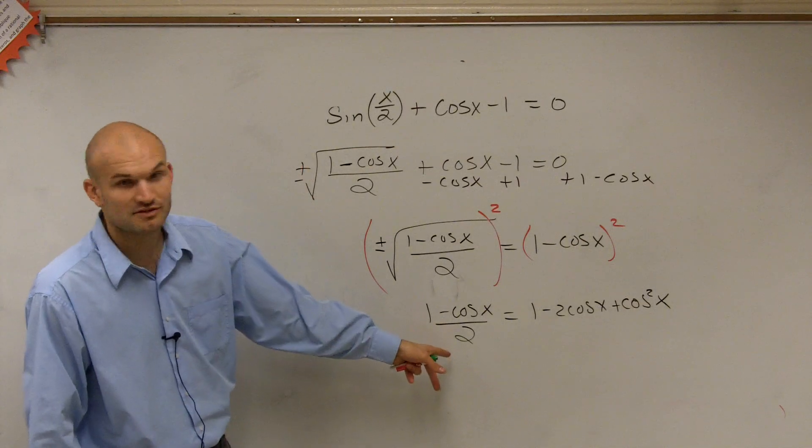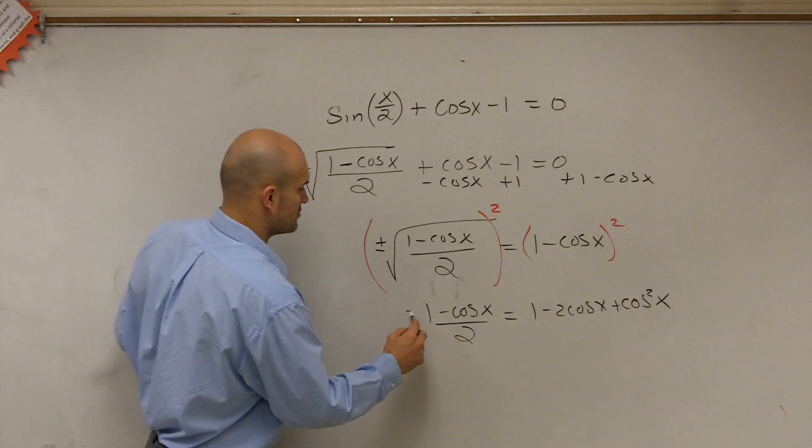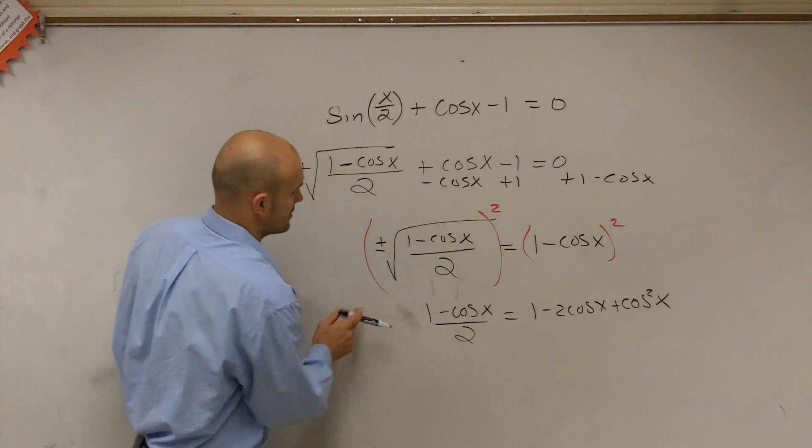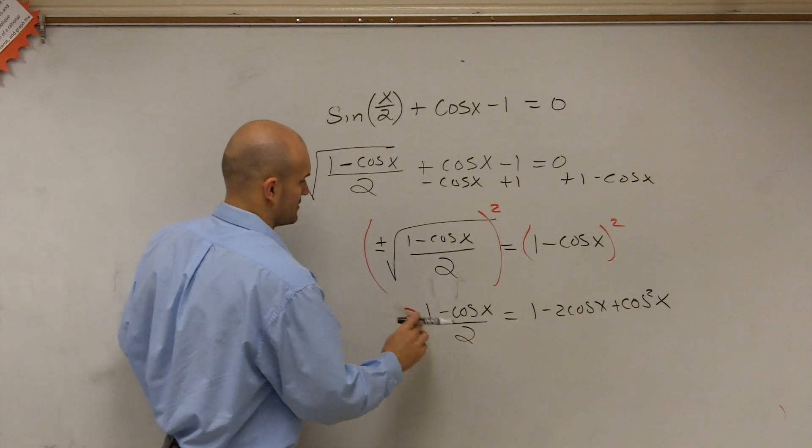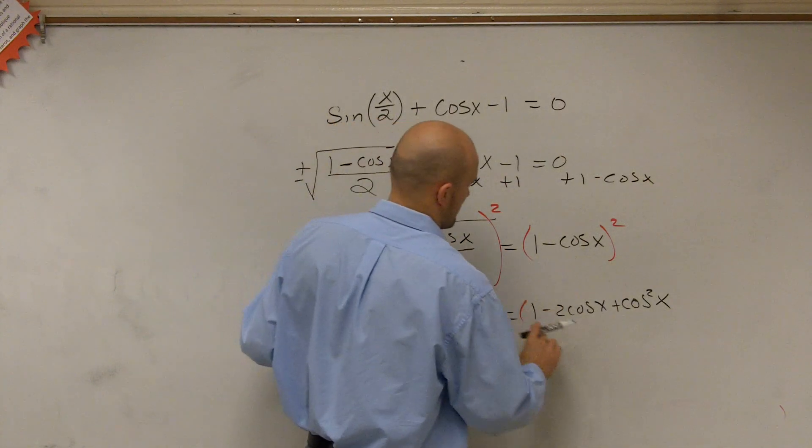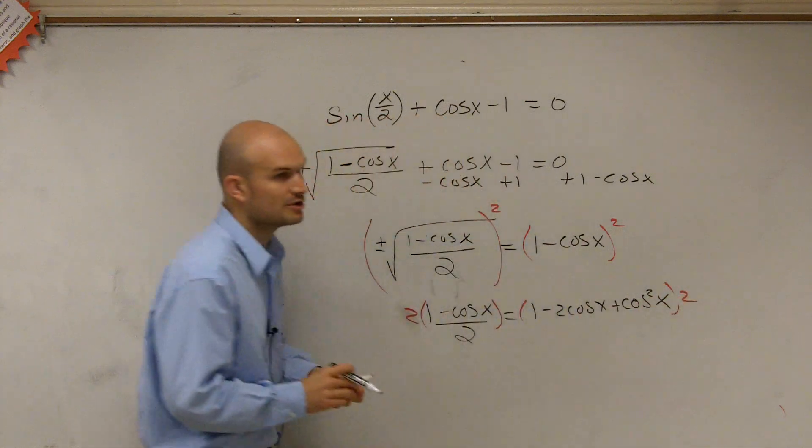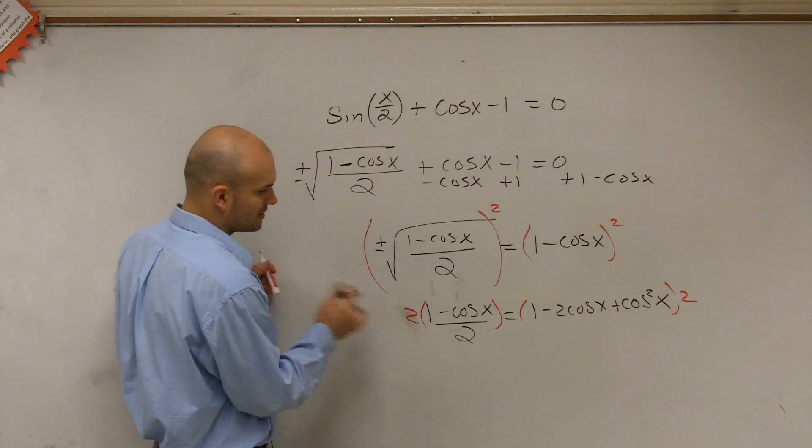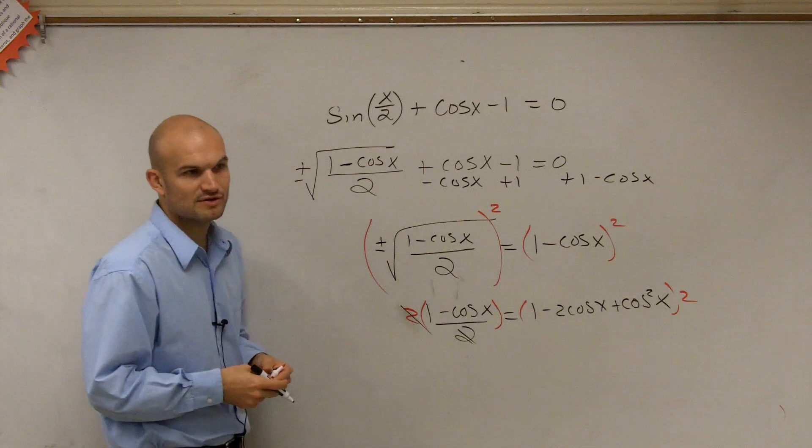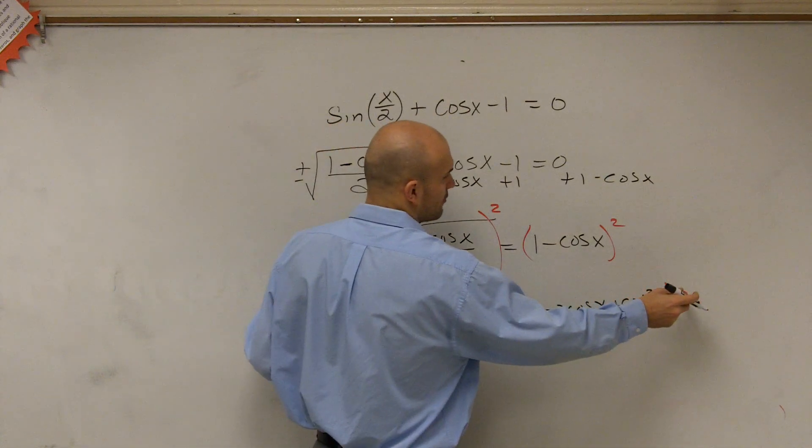Now what we have is we have a 2 on the bottom. Let's get rid of this 2, right? So we multiply by 2 on both sides. Remember, you've got to apply your distributive property. Well, here we don't need to apply distributive property, because those 2's are inverse operations. So they're going to multiply to 1.